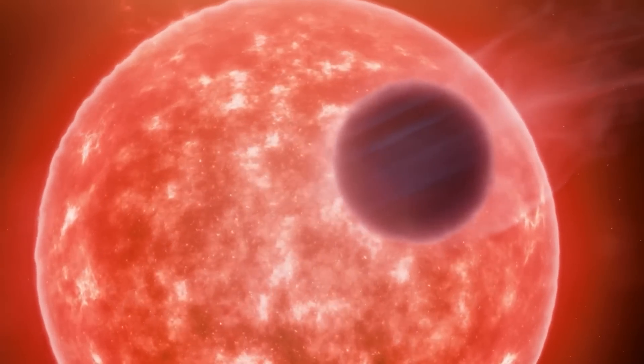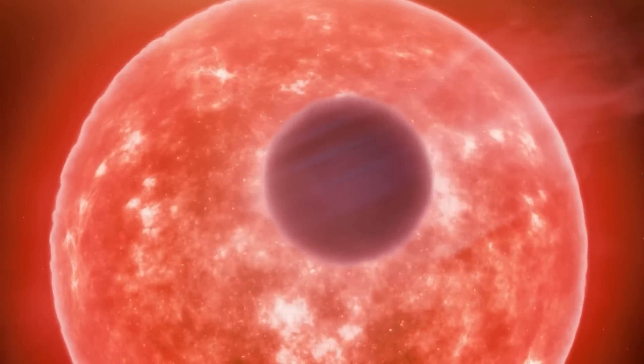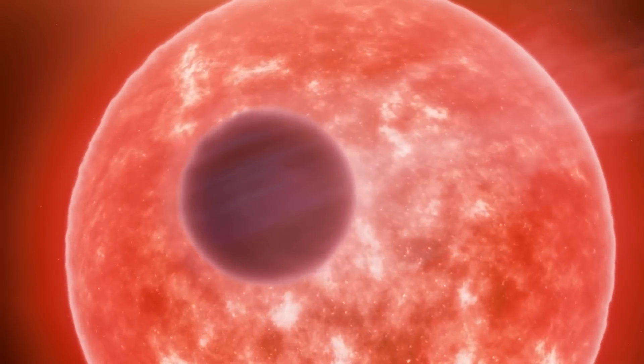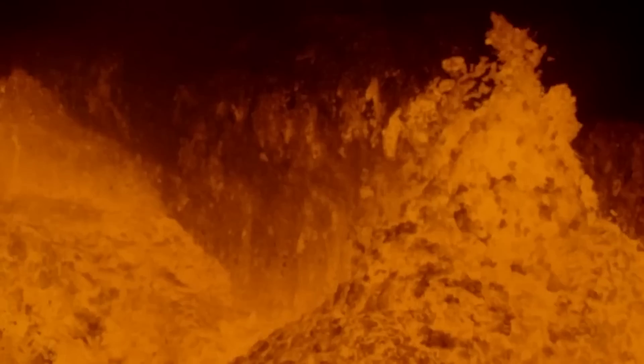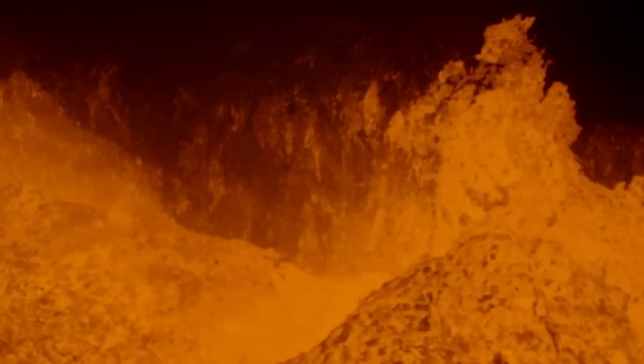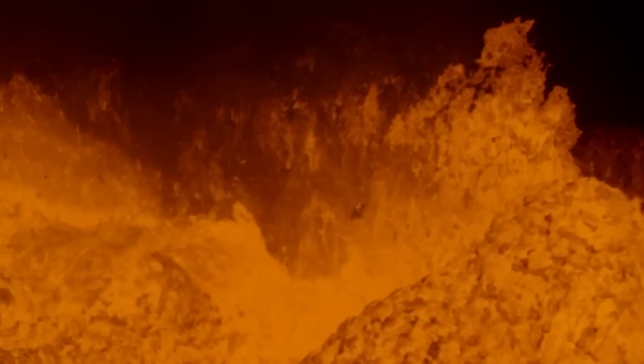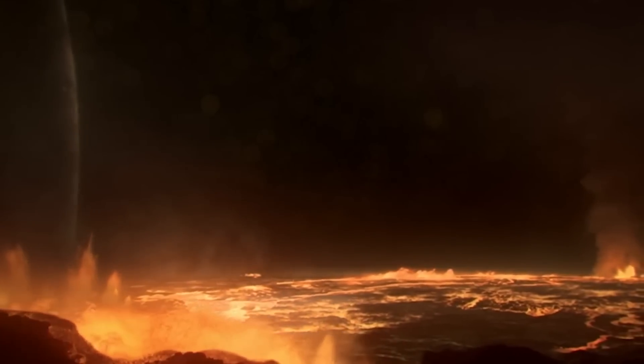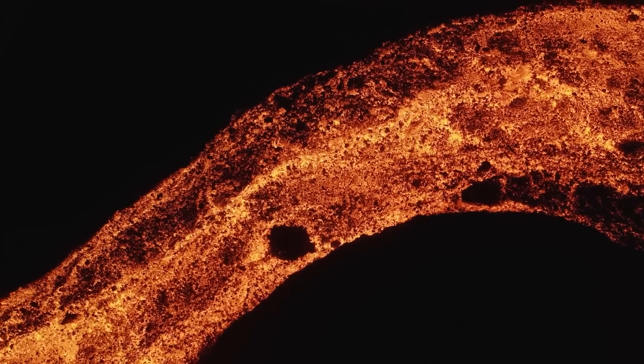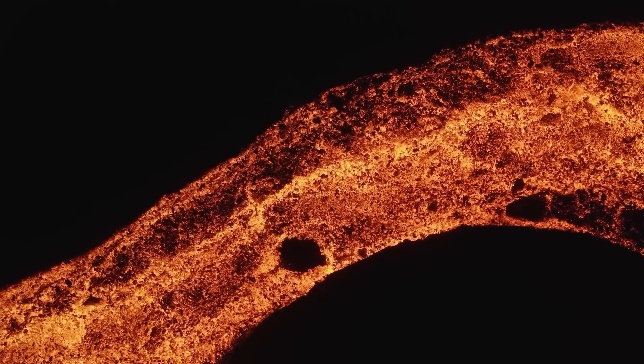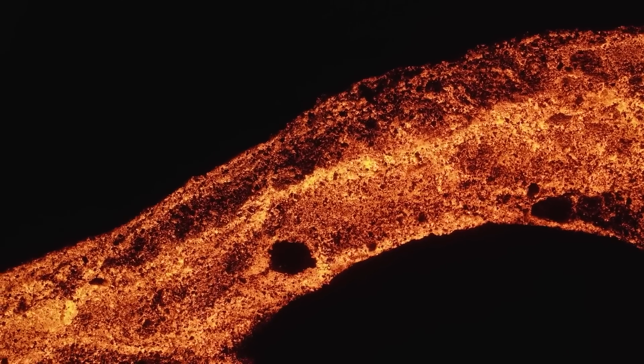However, the star went through its red giant stage some 18.5 million years ago. A heated iron core of the planet is all that remains after spending a large period of time inside its now-dead star. According to scientists, the planet is still draining, which could potentially result in further shrinkage.